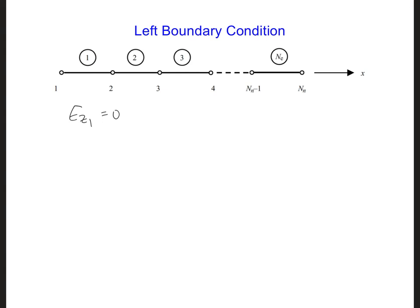To achieve this, we should set all the k coefficients in the first row equal to 0 except the very first one, which should be equal to 1 since it's multiplied by ez1.